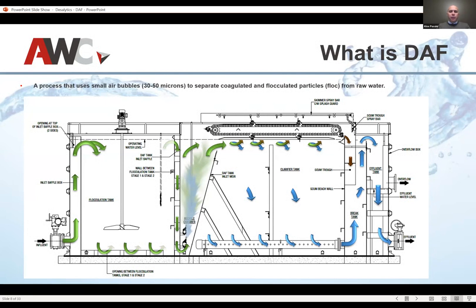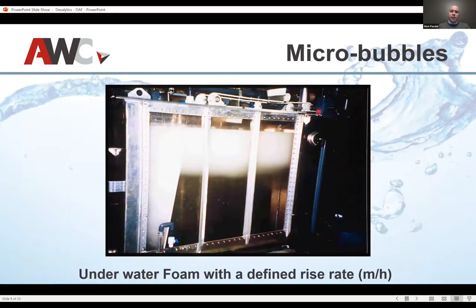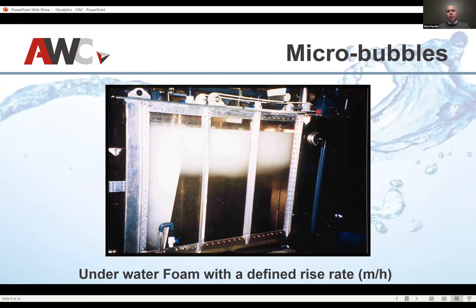Now that we understand what the technology looks like, we can start looking at applications — how things like this can either be retrofitted or put into new plants. This is a pilot plant. The visual alone gives you a better idea of how it comes through. Again, we've got flocculation ahead of this, then the saturators. The water coming through — these are all micro bubbles. It almost looks like milk or a mocha. Then you've got your skimmer rolling off the top. Key aspects to look at are your flocculation rate, your recycling rate — you are recycling water back as you create your foam — and your hydraulic loading rate going through dissolved air flotation.